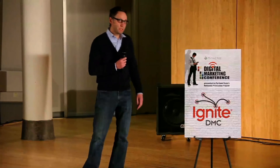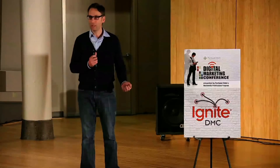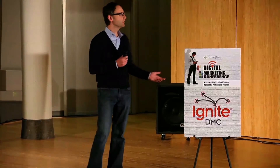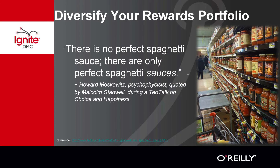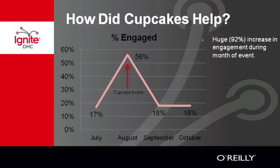Our first big takeaway was that we were missing the gluten-free cupcake - we should have known, being in Portland. But the other thing we found is that some people didn't want the cupcake at all. The moral of the story was that you have to have a wide diversity of rewards in order to meet the unique needs of your members. In the end, we totaled up all of our engagement stats and engagement was through the roof that month that we had the cupcakes.